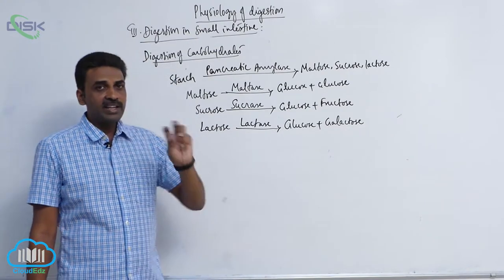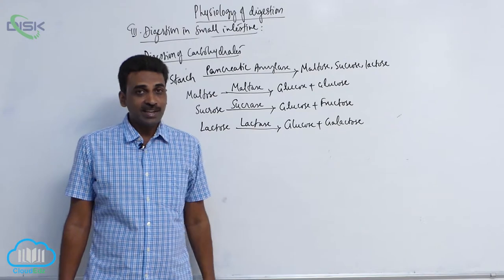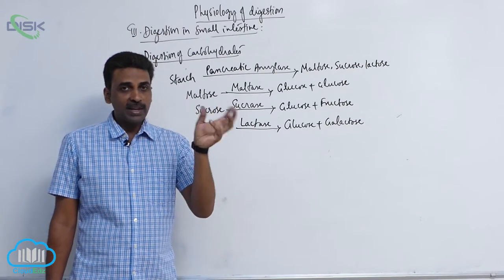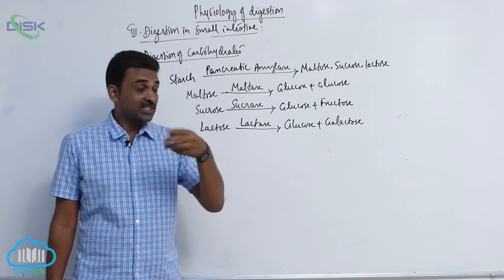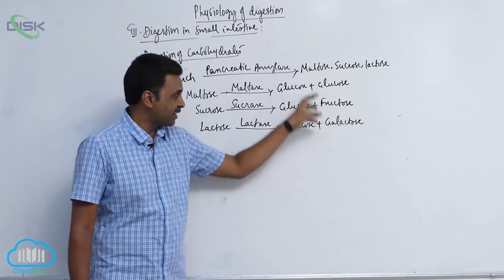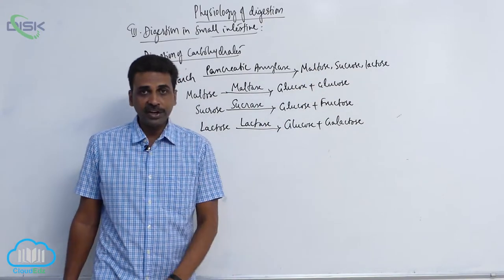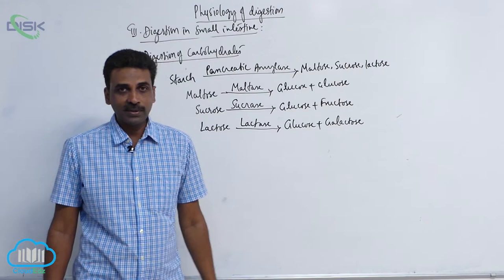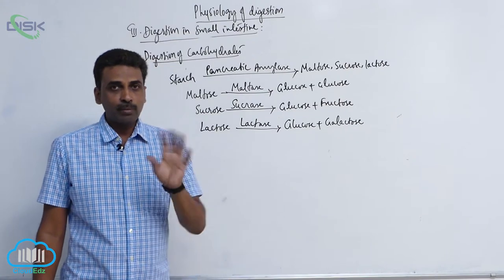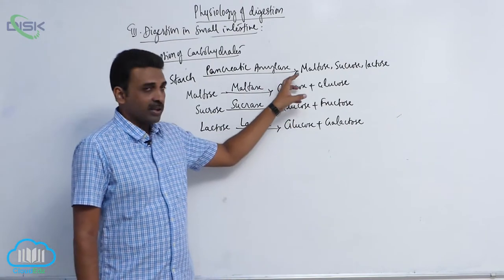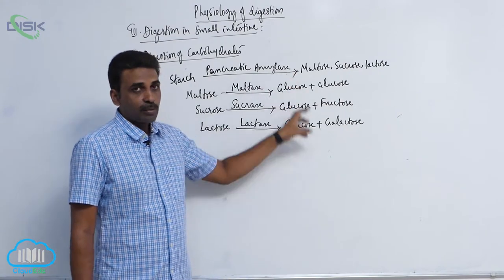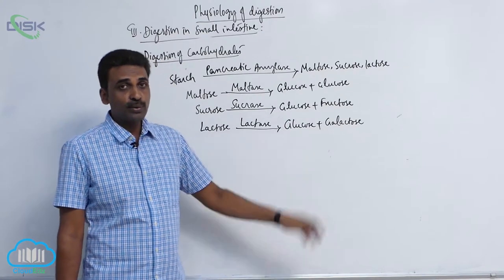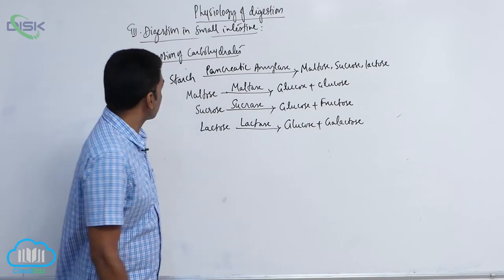So carbohydrate digestion is completed when complex starch is first converted into disaccharides and finally into monosaccharides — glucose, fructose, and galactose. Carbohydrate digestion ends when the carbohydrates are converted into simple sugars like glucose, fructose, and galactose.